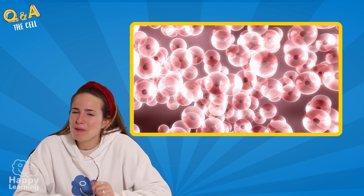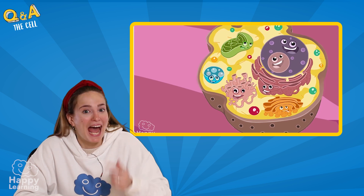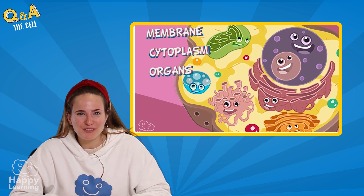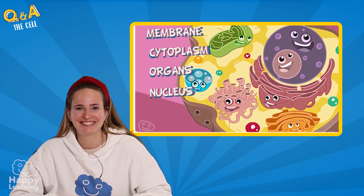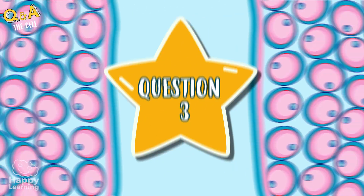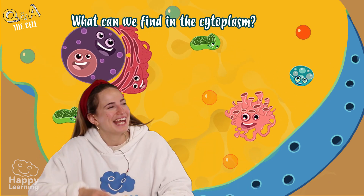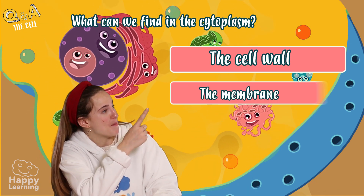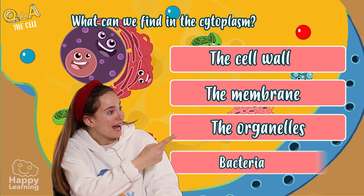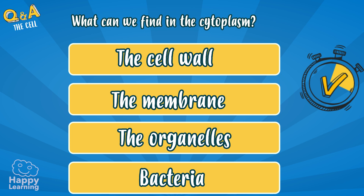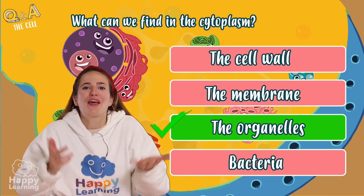Have you been paying attention to the explanation and observed the diagram properly? Well then you're going to find this next question very easy. What can we find in the cytoplasm? Is it the cell wall, the membrane, the organelle, or bacteria? Of course, the organelle.